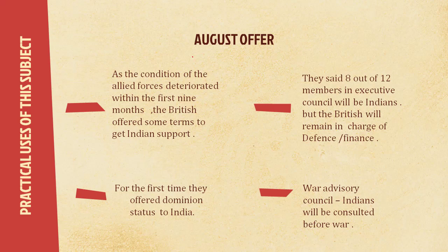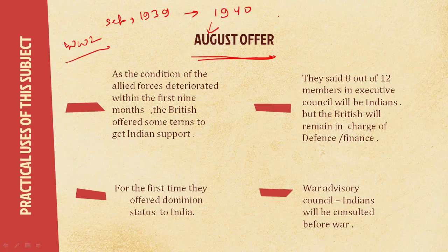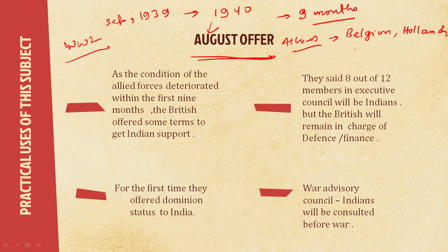In this slide we will deal with the August offer. The reasons behind sending it: World War II started in September 1939, and by August 1940 — within 9 months — the Allies had lost Belgium, Holland, Netherlands, and most importantly France, a major participant of World War II from the Allies side. They were completely on the back foot. They desperately needed Congress support and could not afford to get distracted by India's freedom struggle. That is why they sent the August offer — to get Indian support and avoid any mass movement in India.